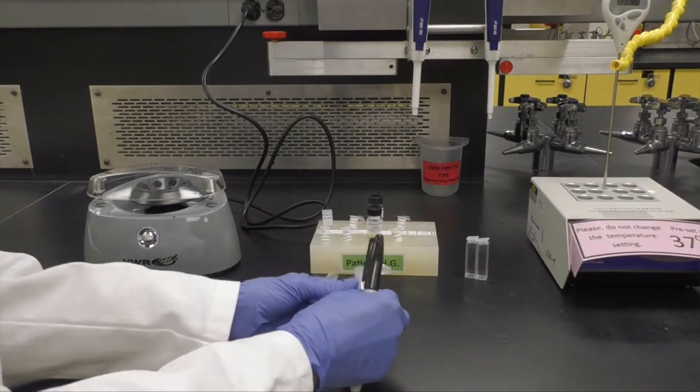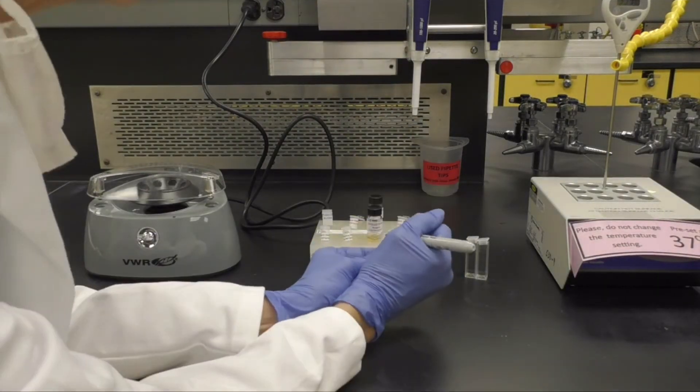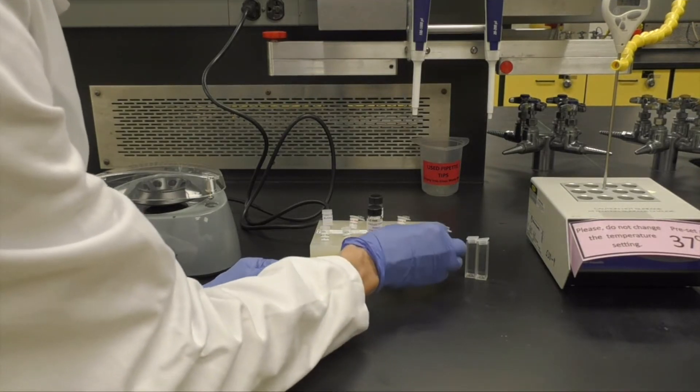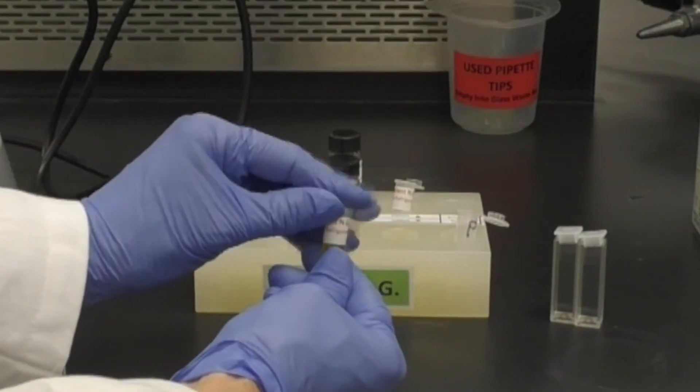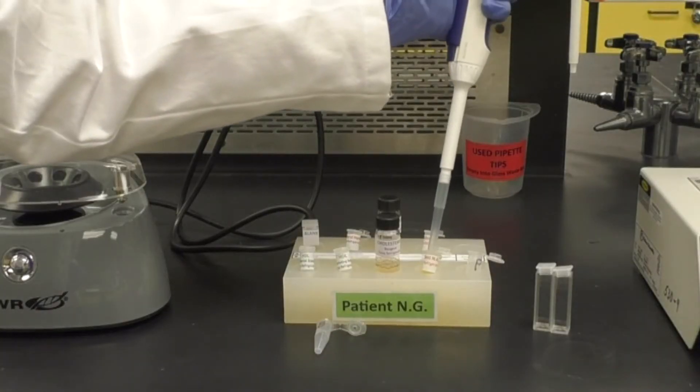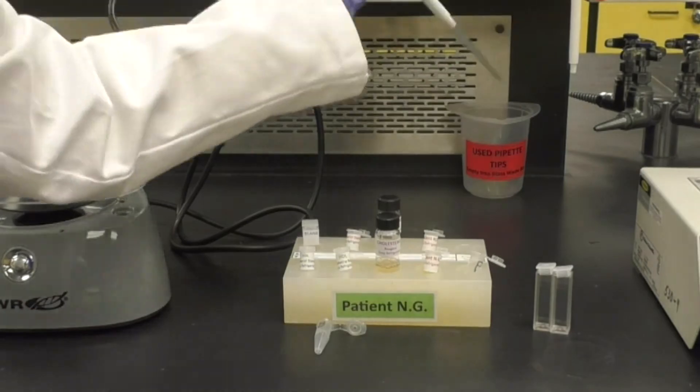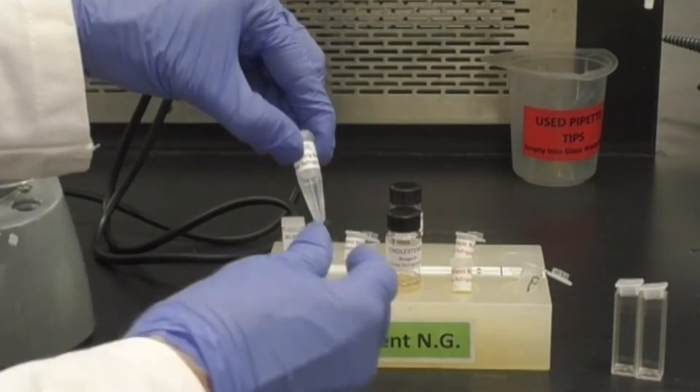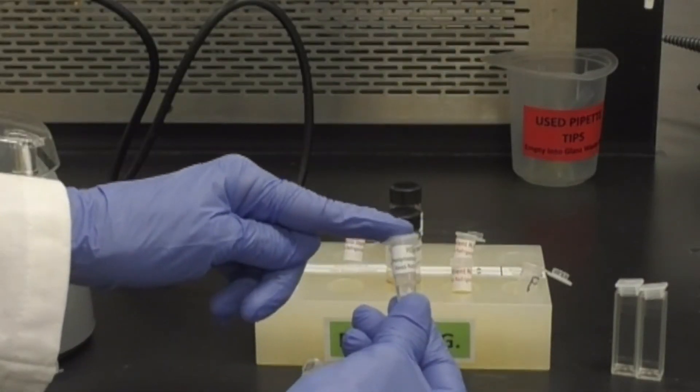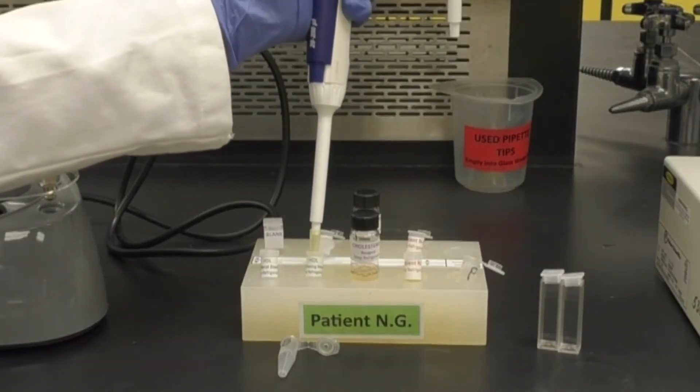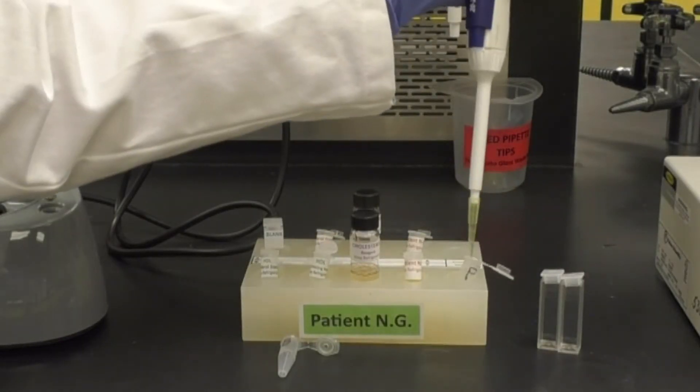To perform the HDL test, start by labeling the microfuge tubes to indicate your patient and balance tube. Add 500 microliters of your patient sample to the patient tube. Then add 50 microliters of HDL precipitating reagent. This reagent will pull out any non-HDL fractions from the patient sample.